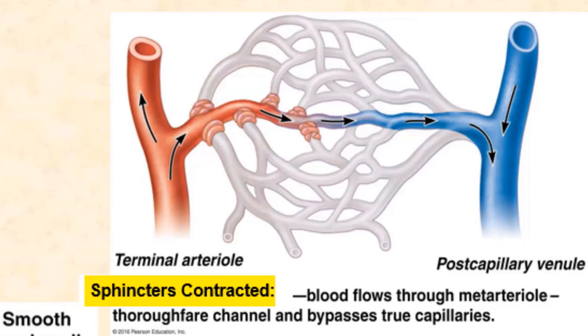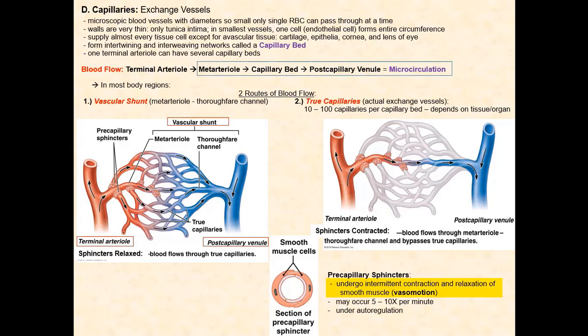The smooth muscle tissue of the pre-capillary sphincters intermittently contracts and relaxes, so these pre-capillary sphincters vasoconstrict and vasodilate the true capillaries anywhere between 5 to 10 times per minute. This is referred to as vasomotion. This vasomotion is under local control — in other words, autoregulation — which means that locally produced chemicals and the concentration of gases, nutrients, and wastes in the tissues will determine the extent of constriction and dilation.